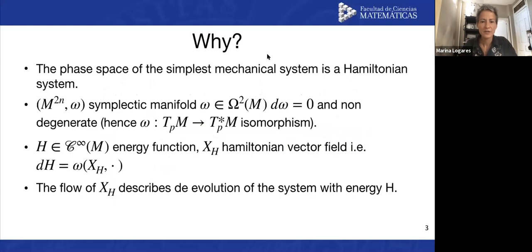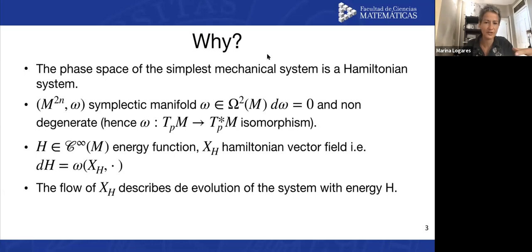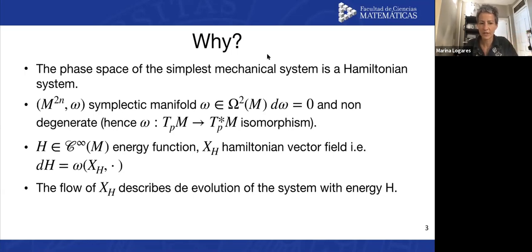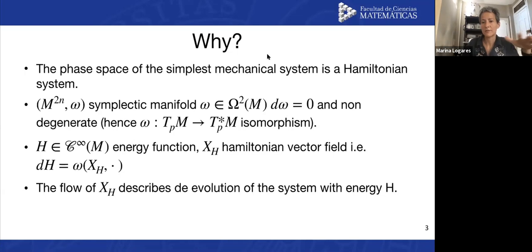The phase space of the simplest mechanical system is just a Hamiltonian system. We are trying to do some physics. What are these Hamiltonian systems? We have symplectic manifolds, which are even-dimensional manifolds with a two-form which is closed and non-degenerate, meaning we have an isomorphism from the tangent to the cotangent space of the manifold. Then we choose an energy function H, an infinity function on M, on the symplectic manifold. We construct a Hamiltonian vector field by requiring that the differential of H equals the coupling with the symplectic form. The flow of this Hamiltonian vector field describes the evolution of our mechanical system.